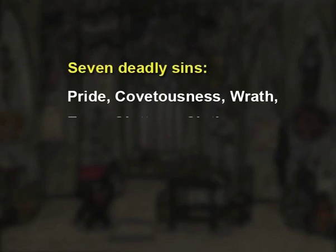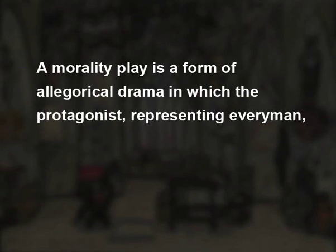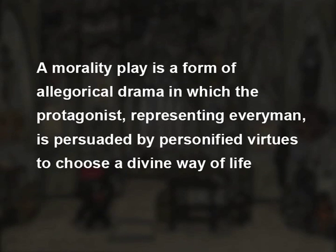Lucifer presents before Faustus a personification of the seven deadly sins: pride, covetousness, wrath, envy, gluttony, sloth, and lechery. In the appearance of the good and bad angels and the seven deadly sins, we find elements of a medieval morality play — an allegorical drama in which the protagonist representing every man is persuaded by personified virtues to choose a divine way of life and shun evil. But Faustus fails to see them as warnings. From this point until the end of the play, Faustus does nothing worthwhile. He appears to scholars and speaks about his damnation. He believes that God is merciful and seems to repent for a while, but Mephistopheles comes to collect his soul, and we are told that he follows the devil to hell.